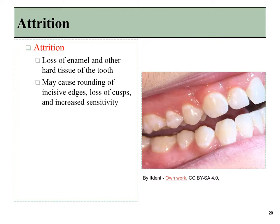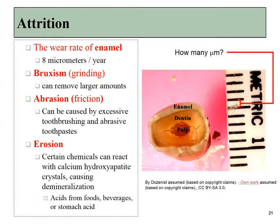Enamel can be lost over time — we call that attrition. It may lead to the rounding of some edges of the teeth and loss of the cusps. If enough enamel is lost, that can greatly increase the sensitivity of the teeth. Under normal circumstances, enamel wears away at roughly 8 micrometers per year, or close enough to 10 micrometers. Since there are 1,000 micrometers in a millimeter, it takes about 100 years to lose a millimeter of enamel — so the enamel we produce is good for about a hundred years or more.